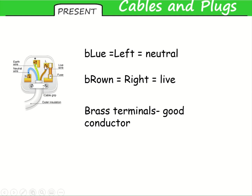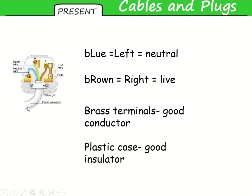The terminals — the bits the screws go into — are made of brass, chosen because they are good conductors. Conversely, the case and the covering of each wire, the insulation of the wires, is made of plastic, because plastic is a good insulator.